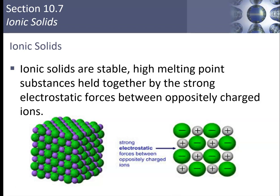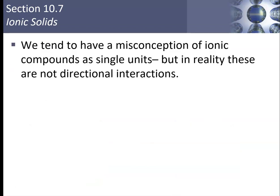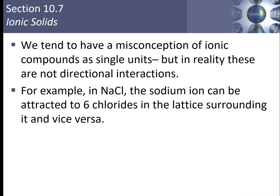Ionic solids are very stable. They have high melting points because they're held together by extremely strong electrostatic or Coulombic attractive forces between the oppositely charged ions, so they form a very ordered lattice. Interestingly, we tend to have a misconception about ionic compounds — we think of it as simply one Na and one Cl getting together to make NaCl.